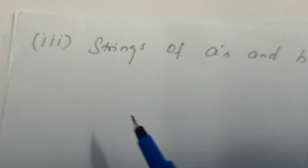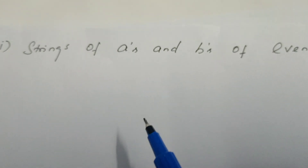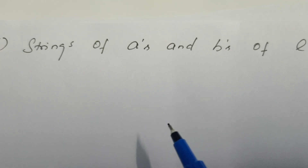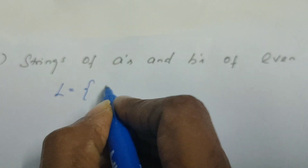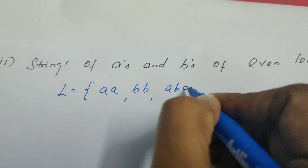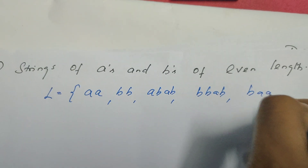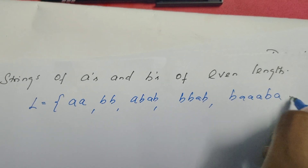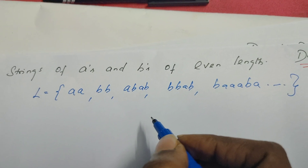Let us read the question. We need to design a DFSM which accepts strings of A's and B's of even length. It means strings of length 0, 2, 4, 6, 8, 10, etc. need to be accepted. The language may contain strings like AB, ABBB, BBABBA — every string must be of even length.